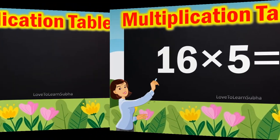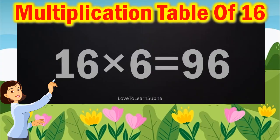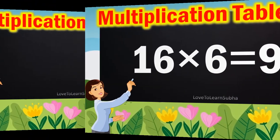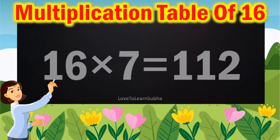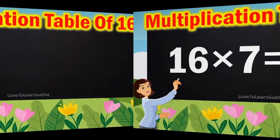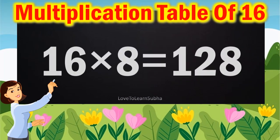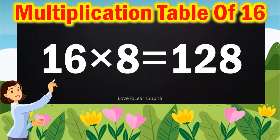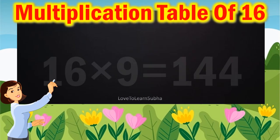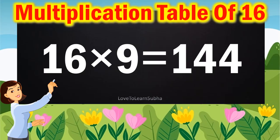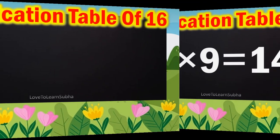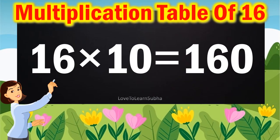16 sixes are 96, 16 sevens are 112, 16 eights are 128, 16 nines are 144, 16 tens are 160.